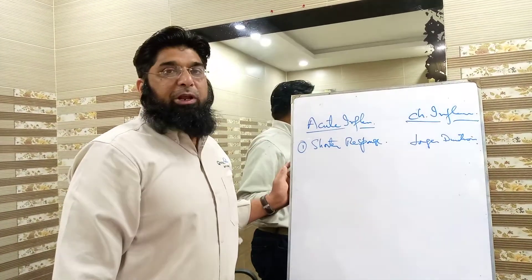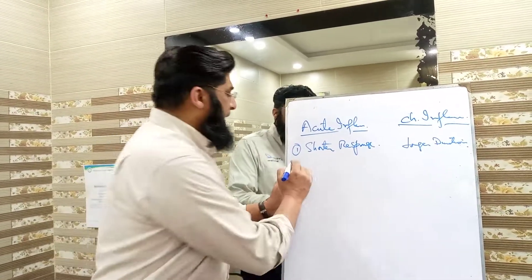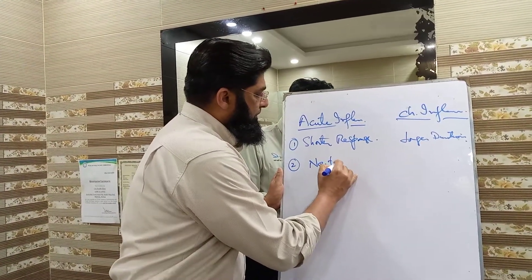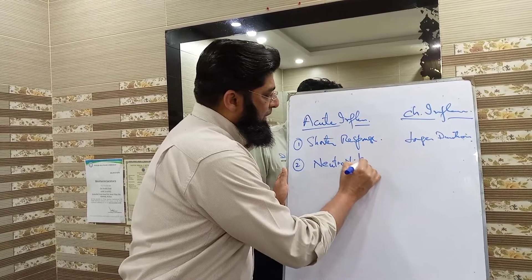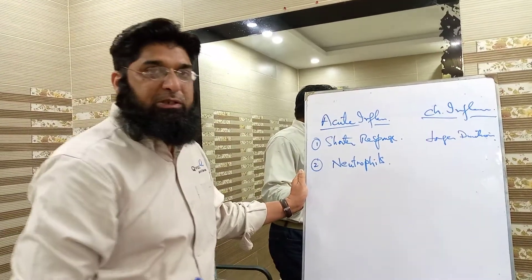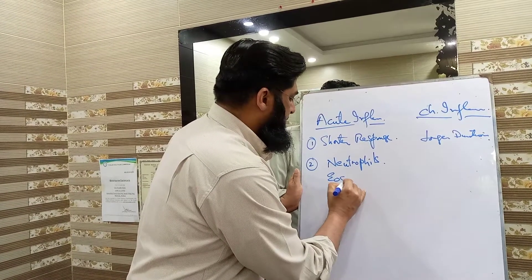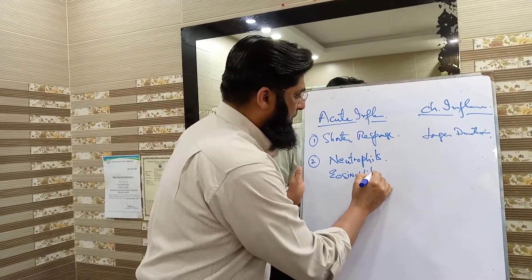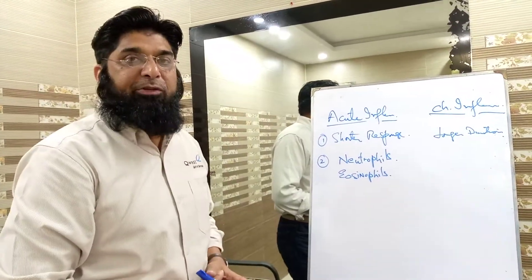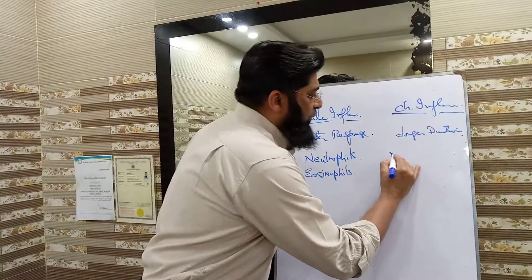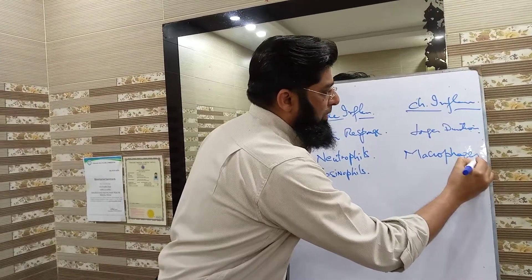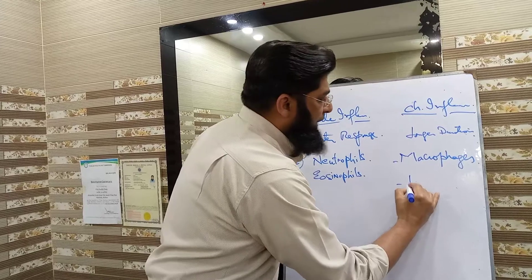Number two: the cells involved in acute inflammation are mainly neutrophils — the hallmark of acute inflammation — and eosinophils. On the other hand, the main chronic inflammatory cells are macrophages and lymphocytes.